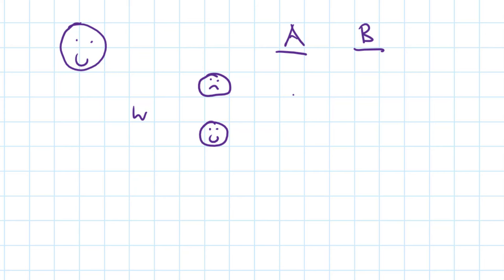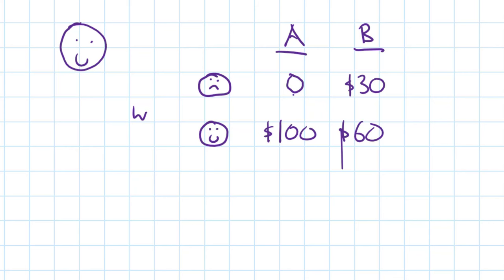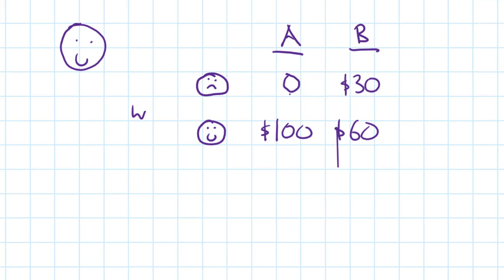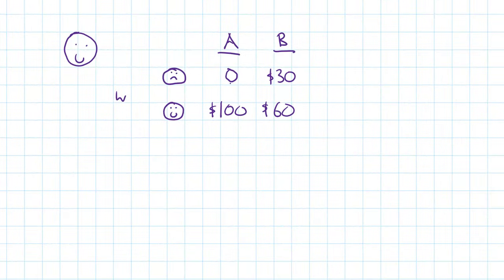We're going to use profits. If I go with crop A and the weather is bad, I make no profit — this is a very sensitive crop. If the weather is good, I make $100. Now let's go with a safer crop. If the weather is bad, this will give me $30. If the weather is good, $60. That is the first step: laying out all of the options in a profit table.